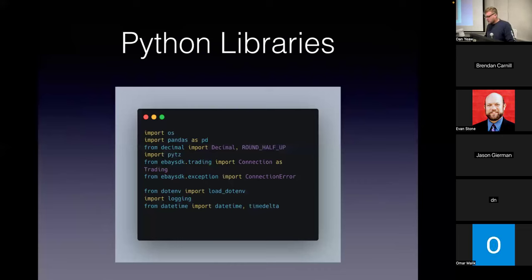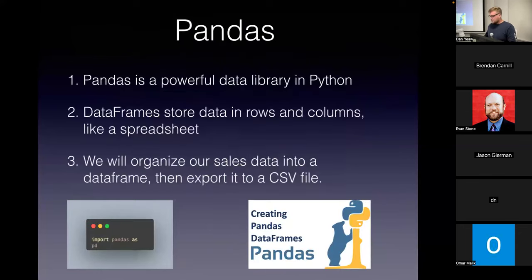We're going to use a lot of different libraries and modules for this program. I like to think of Python libraries as tools in our toolbox that are going to make our job as easy as possible. First up is pandas — a very powerful data library in Python. Its DataFrame feature stores our data in rows and columns just like a spreadsheet, and we're going to use it by organizing our sales data into a pandas DataFrame and then exporting it to a CSV file.